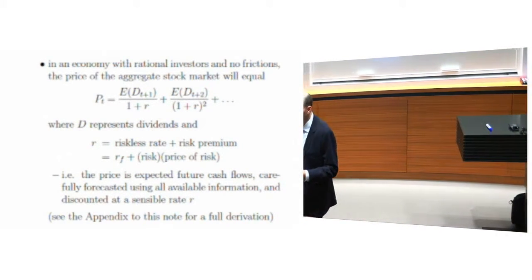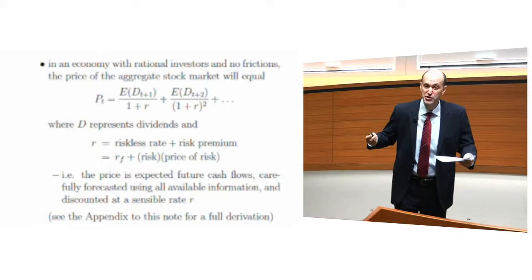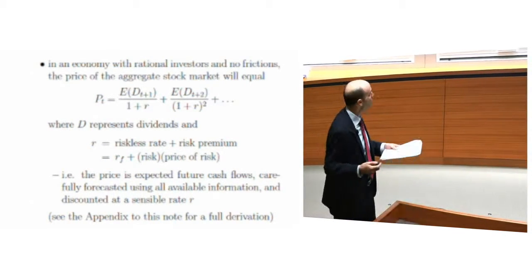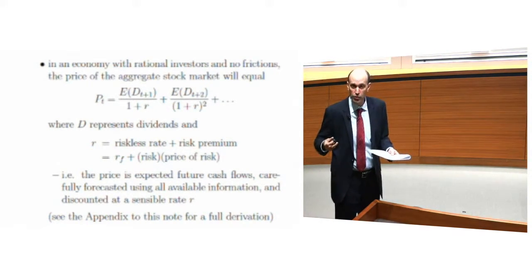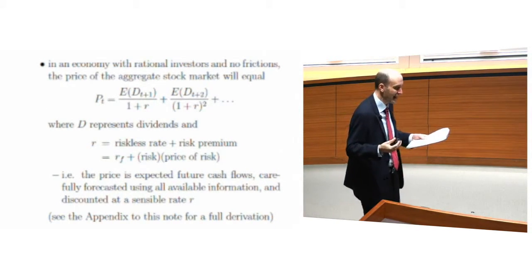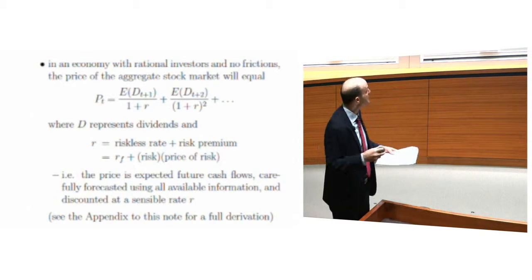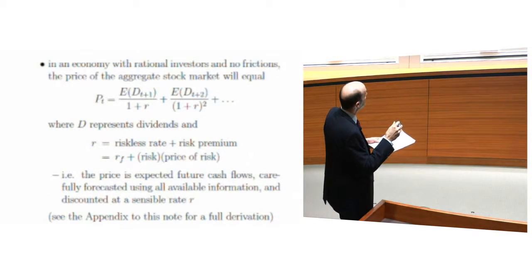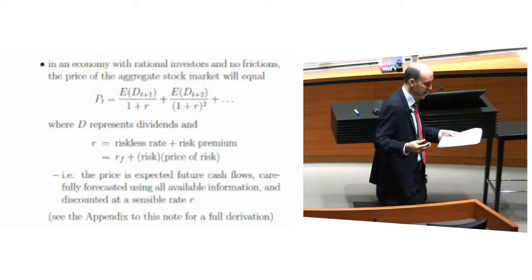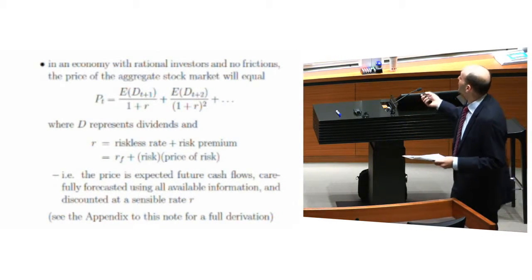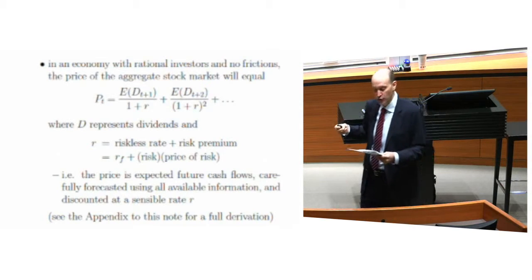The present value formula says that the value of the stock market will be its expected future cash flows — in this case dividends — forecasted as carefully as possible using all available information, and then discounted at a sensible discount rate. That discount rate has two components: a riskless rate RF, which is compensation for the time value of money, plus a risk premium — compensation for risk — made up of the amount of forecasted risk multiplied by the price of risk, which depends on investor risk aversion.